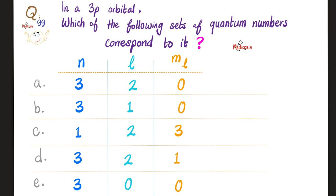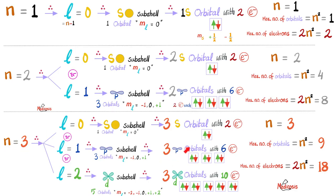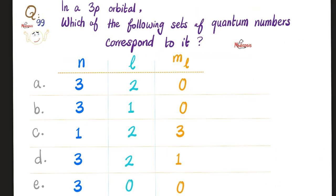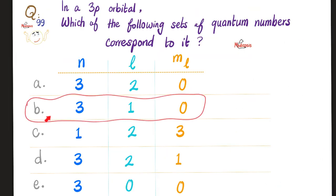Question 99: In a 3p orbital, which set of quantum numbers corresponds to it? The '3' tells us n = 3, so any choice with n ≠ 3 is impossible. For a p sub-shell, l = 1. The magnetic quantum number m_l for a p orbital can be −1, 0, or +1. Therefore n = 3, l = 1, m_l = −1, 0, or +1. The correct answer is B.